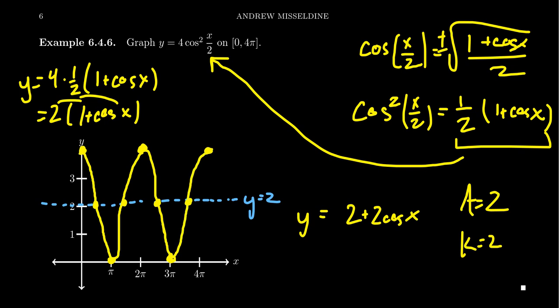And so now here's the graph of y equals 4 cosine squared of x over 2. It seems intimidating, but with the right half-angle identity, this function is equivalent to 2 plus 2 cosine of x, which is fairly simple to graph comparatively.